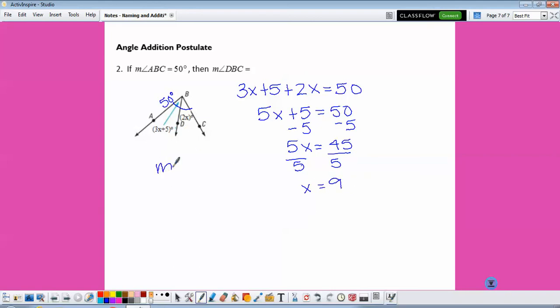So to find the measure of angle DBC, we plug 9 into 2X. 2 times 9 would be 18 degrees.